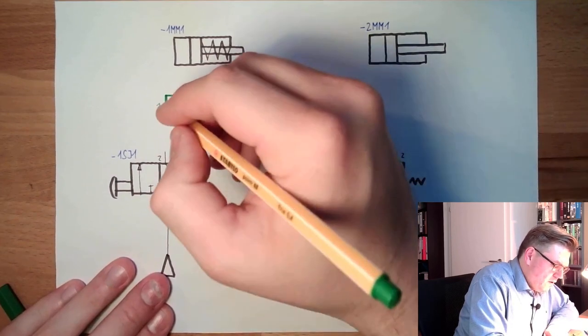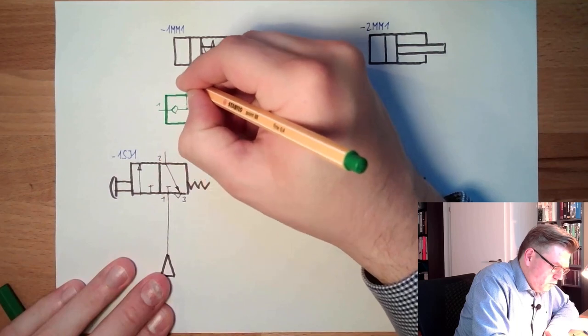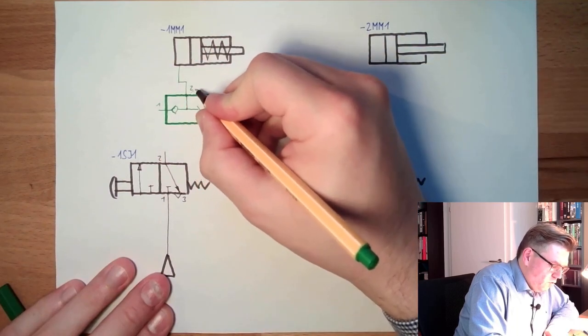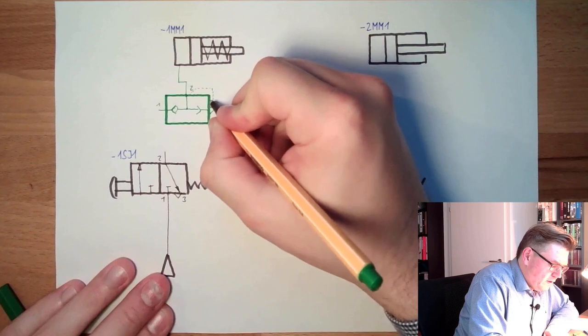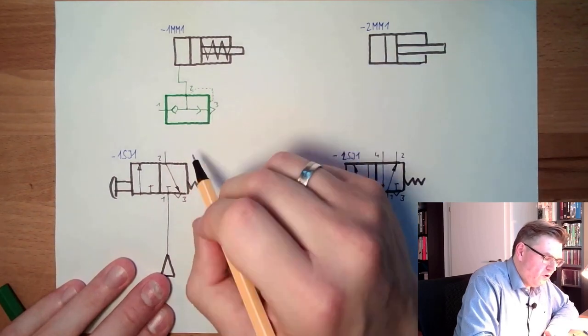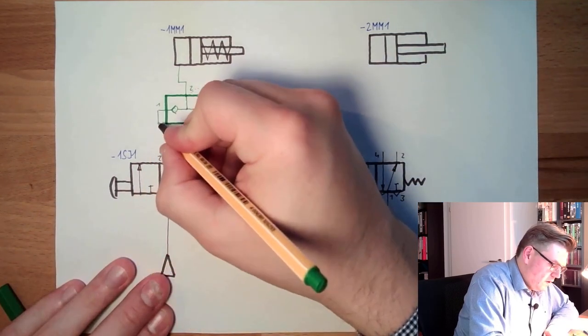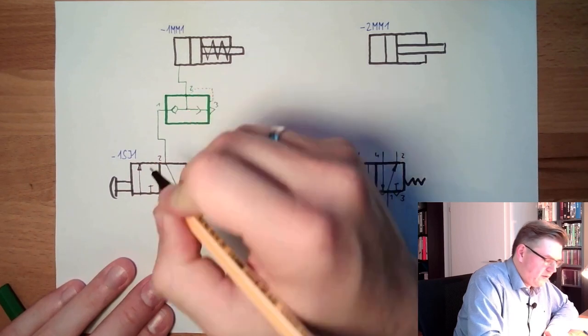And here this is two and two is connected to the cylinder. And two will be also connected to this side so that it will lift off here. And here we are simply connecting to this two.